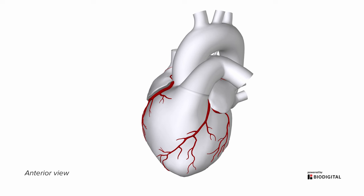What we see here is the pulmonary trunk and the aorta, our right atrium, and our left atrium.